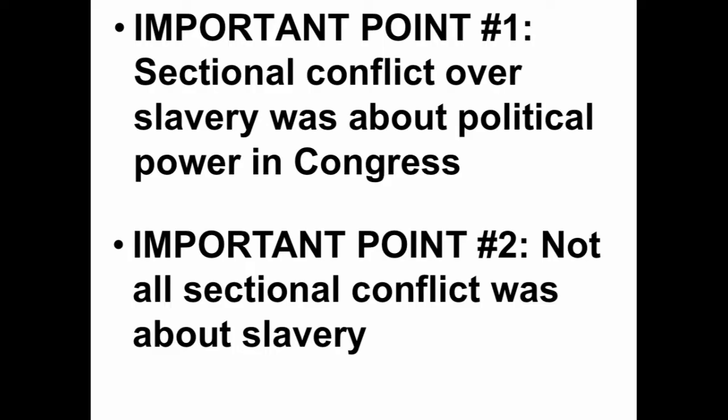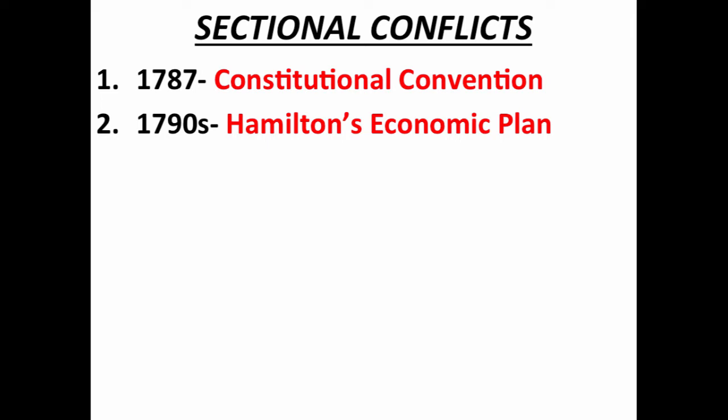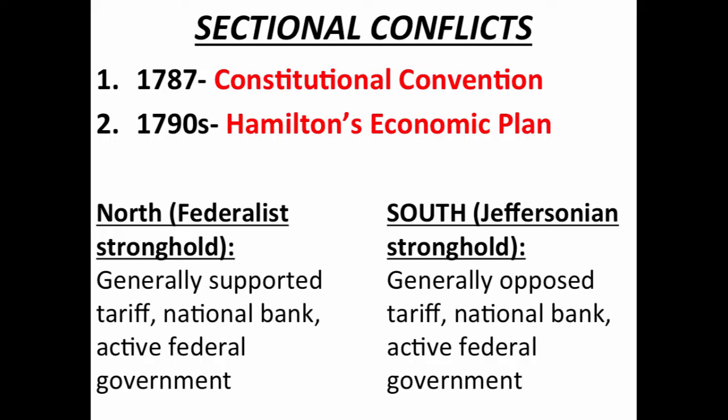Important point number two: not all sectional conflict was about slavery. There were deep divisions not only at the Constitutional Convention but also over Hamilton's economic plan in the 1790s. In general, the North was largely Federalist — in those northern states, support for the tariff, the Bank of the United States, and an active federal government remained relatively strong. Whereas in the South and also the West, this region was largely Democratic-Republican, and people tended to oppose the tariff and the National Bank.